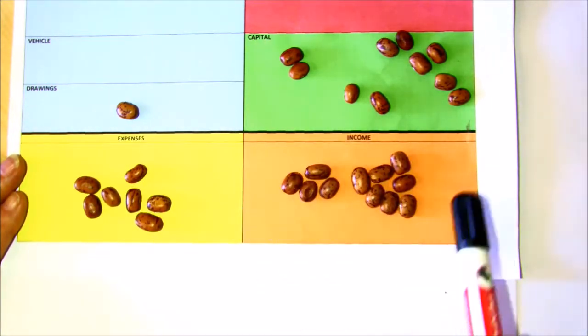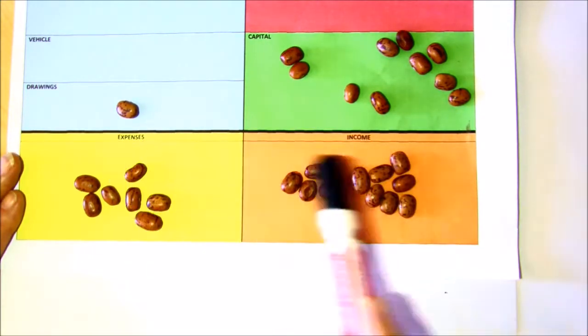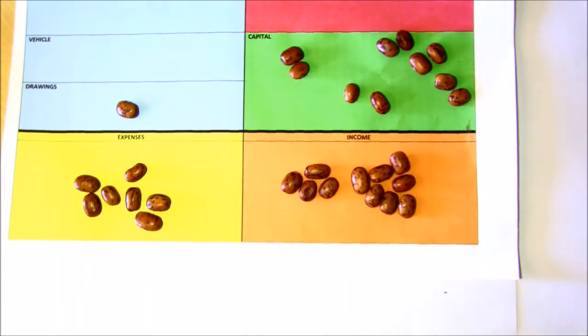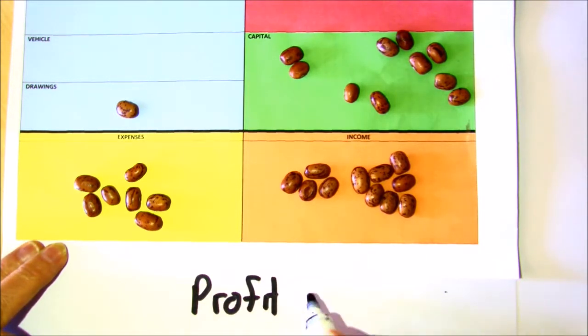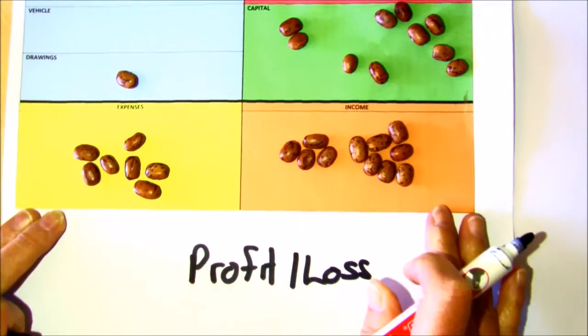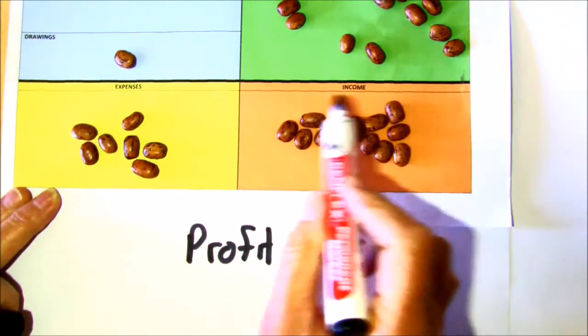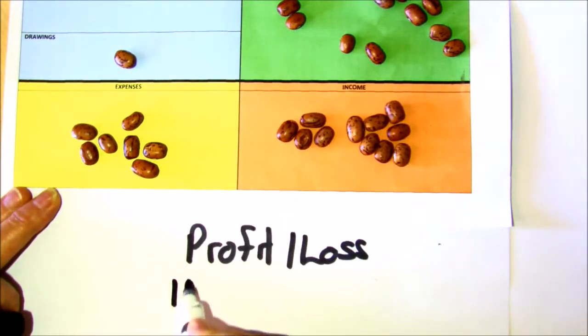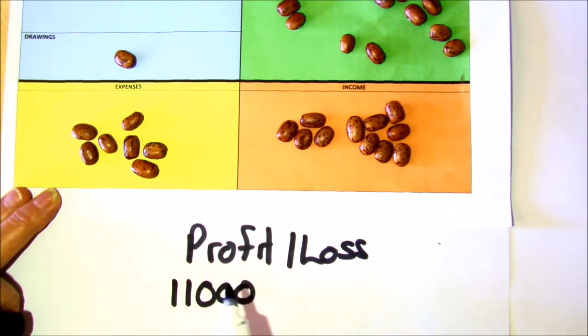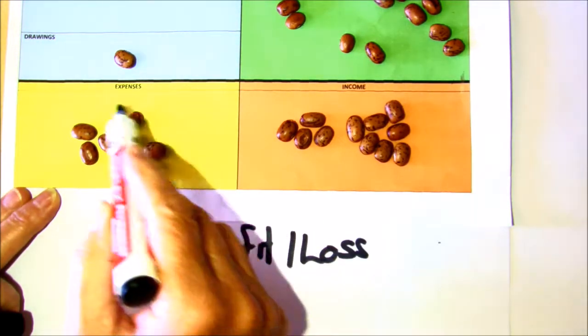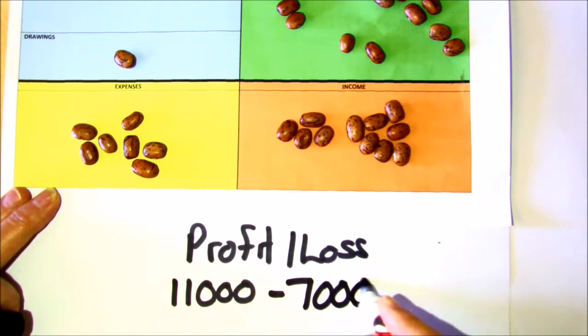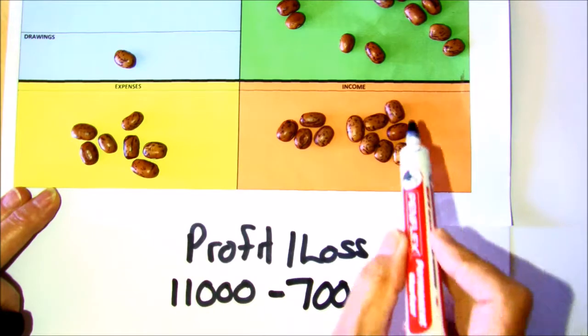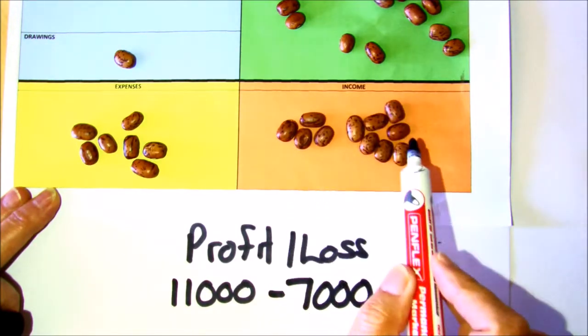Now we've just seen that we've got some expenses and some income. These two together actually give us what profit or loss we make. If we look at this exercise over here, remember counting the beans, we got 11,000 rands worth of income but we had 7,000 rands of expenses to pay.